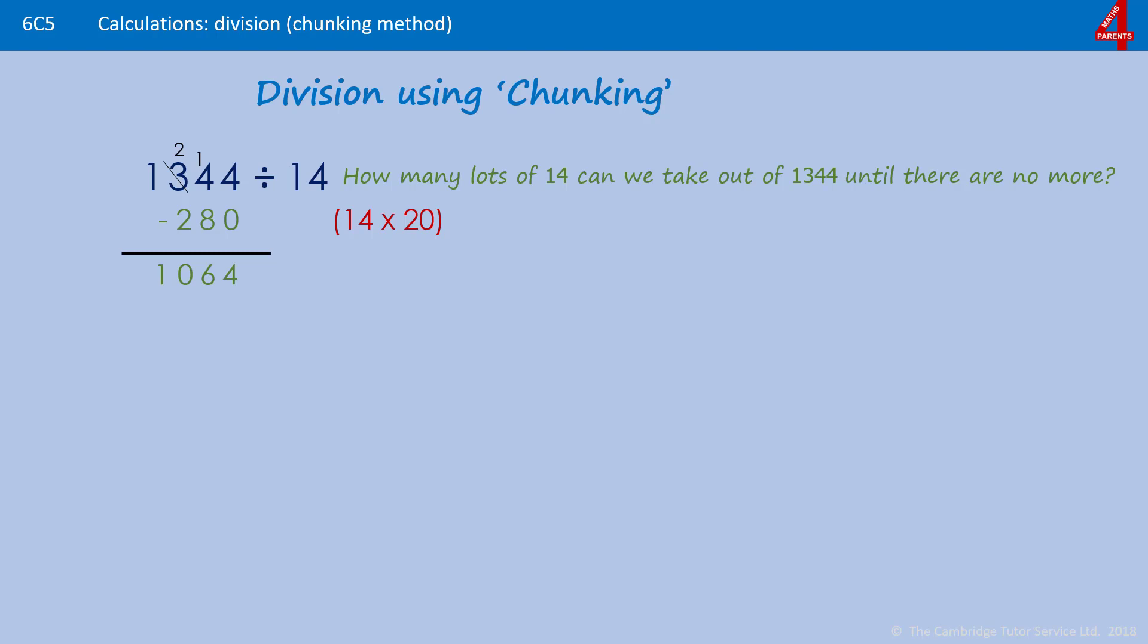If you know that 2 lots of 14 is 28, then you'll know that 4 lots of 14 must be 56, so let's try 14 times 40 and take away 560.